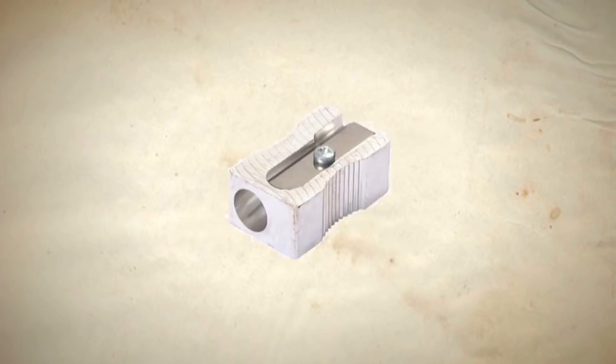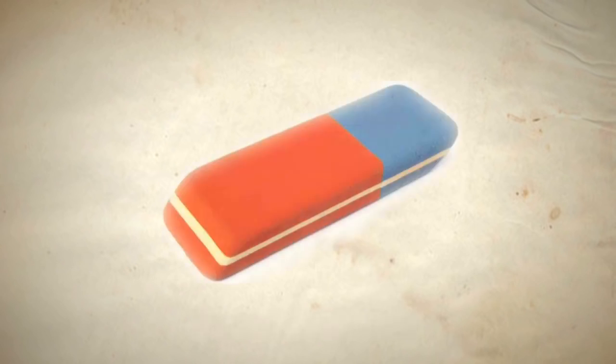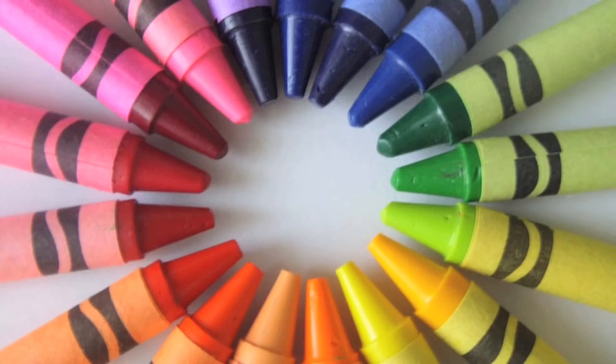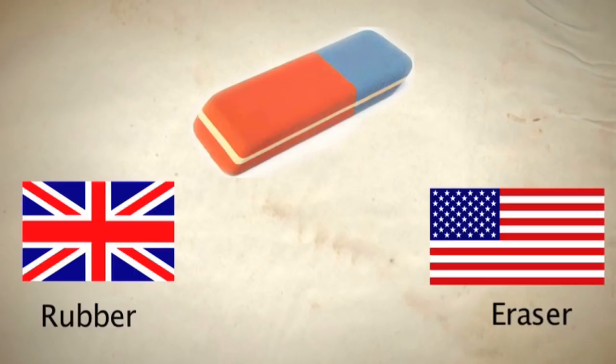Felt tip, pencil sharpener, rubber, eraser, crayon. Notice that rubber is used in the United Kingdom and eraser is only used in the United States.